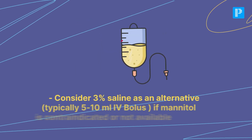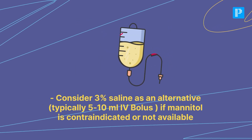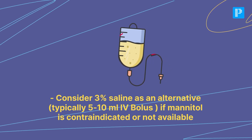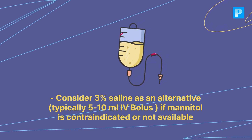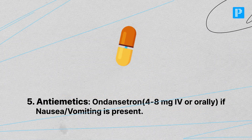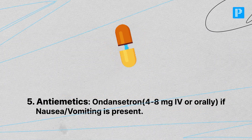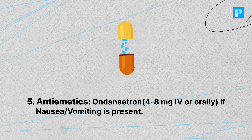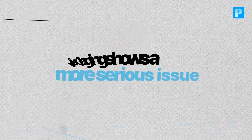Consider hypertonic saline — 3% saline as an alternative, typically 5 to 10 ml IV bolus — if mannitol is contraindicated or not available. Anti-emetics like ondansetron 4 to 8 mg IV or orally can be given if nausea and vomiting are present.